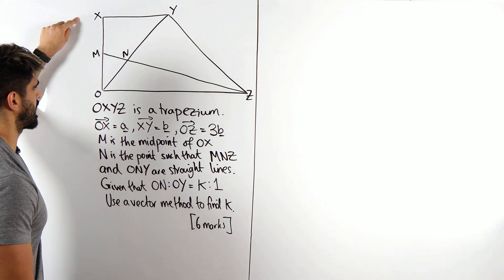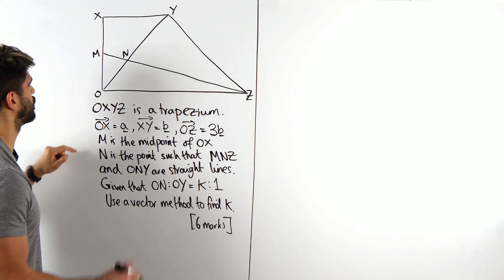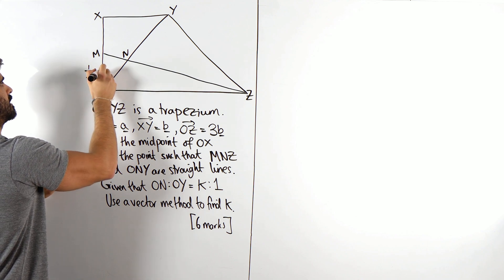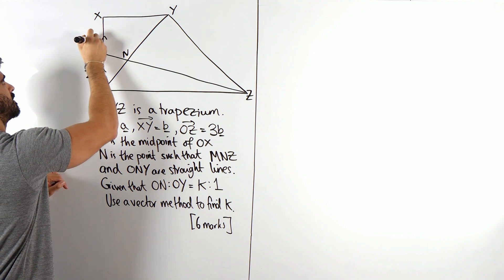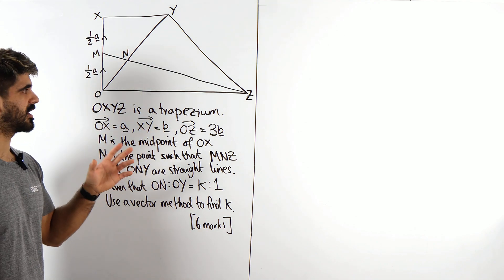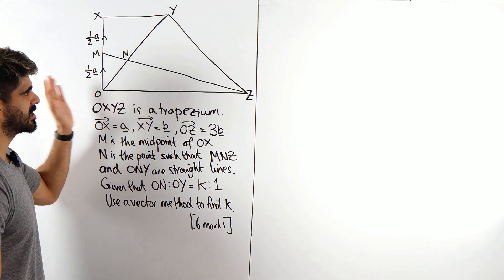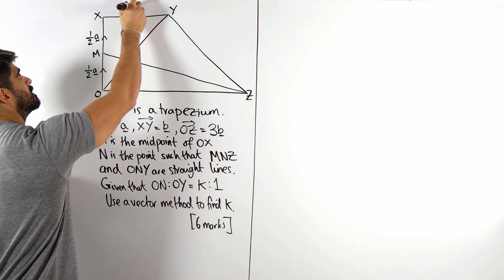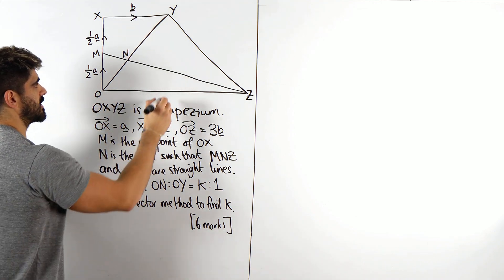So O to X is A. Now I know already that M is the midpoint, so instead of saying A, I'm going to say this is a half A and this is a half A. You want to try and reduce the amount of mess on your diagram. X to Y is B and O to Z is 3B.